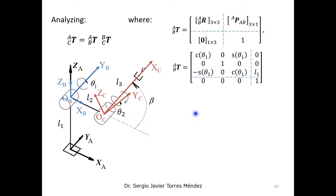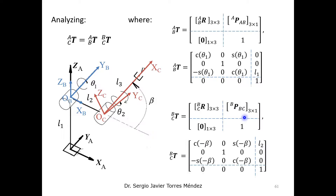Now for the next homogeneous transformation matrix, c with respect to b. Again, we need the basic rotational matrix and the translational matrix. The rotation here is again about the y axis, except that in this case it is in the opposite direction following the right-hand rule, so we change the sign to negative. The distance between the origin of b and c is a magnitude L2 along the x axis in the positive direction.